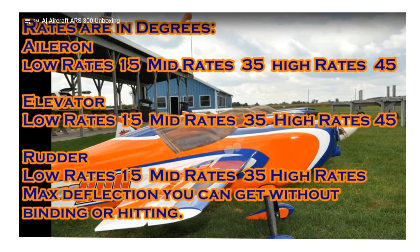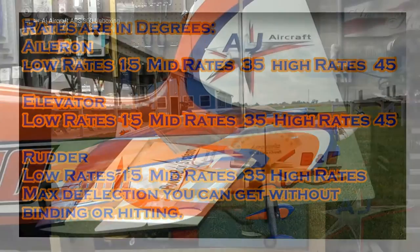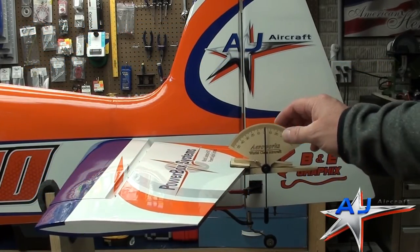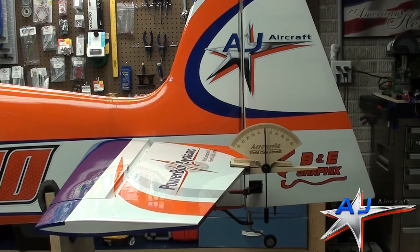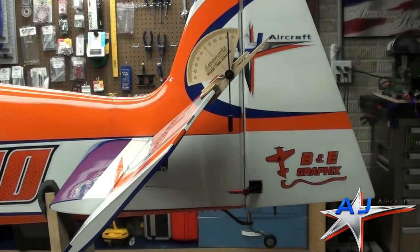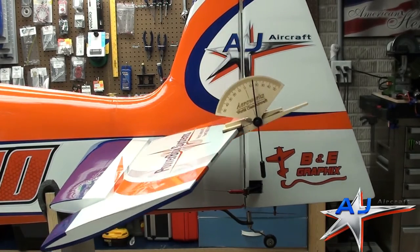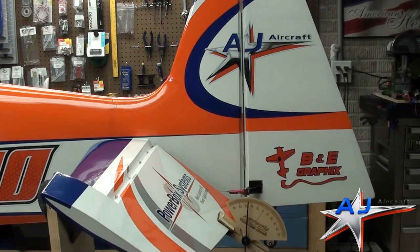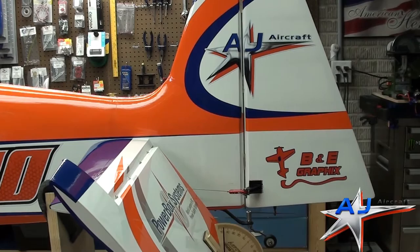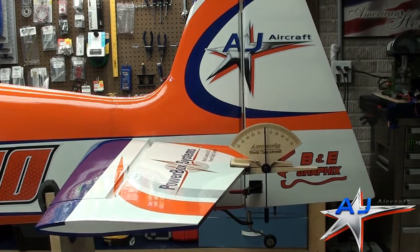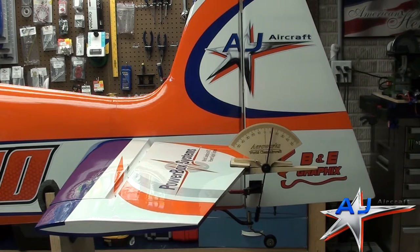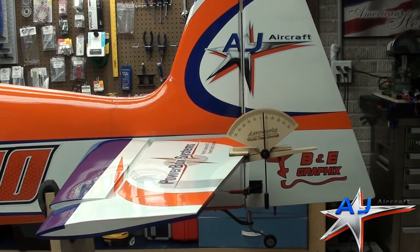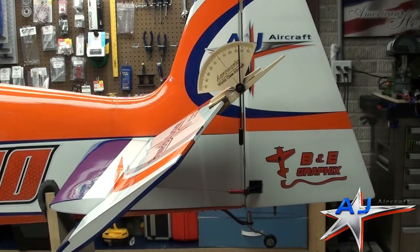Now we're going to talk about setting your rates. Here you can see what elevator low, high, and mid rates are, along with the rudder, but we'll start with the elevator. I have a nice little degree meter and I use this for everything. You're always going to start with high rates — I'm looking for 45 degrees on high and 45 degrees on low. You want to make sure that both elevators are moving exactly the same. I'll dial in 45 degrees.